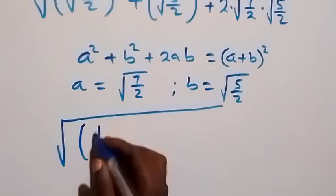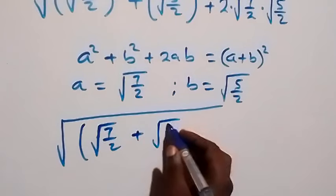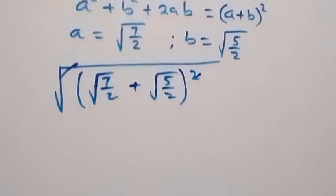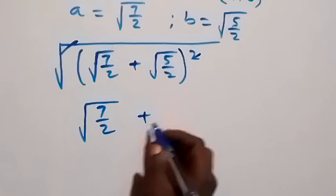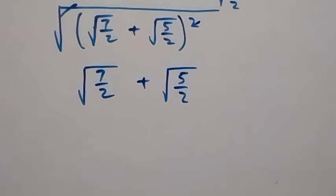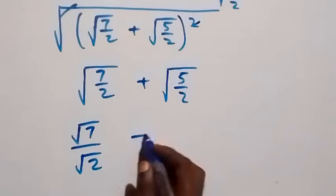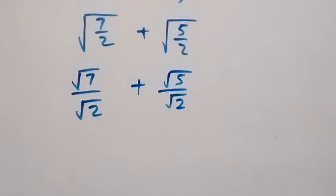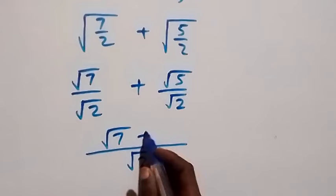...root 7 over 2 plus root 5 over 2, all squared. Then here the square cancels the square root, giving us root 7 over 2 plus root 5 over 2. This can be separated as root 7 over root 2 plus root 5 over root 2, then bringing it together over one denominator of root 2, that gives us root 7 plus root 5, all over root 2.